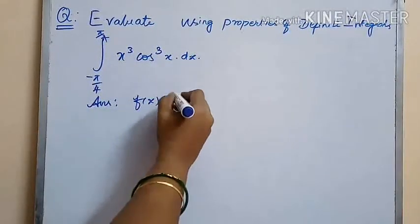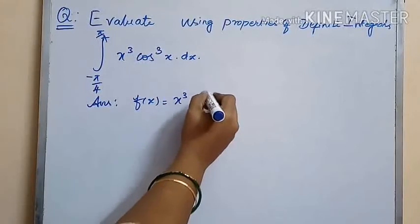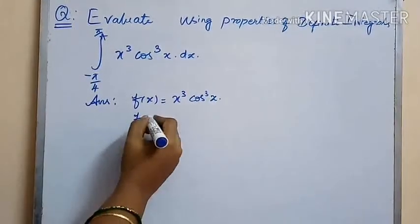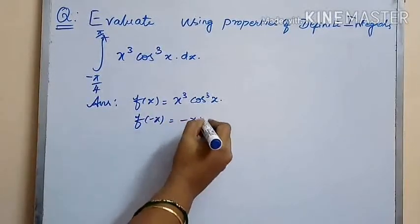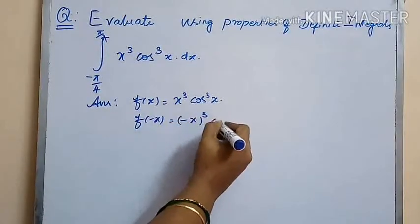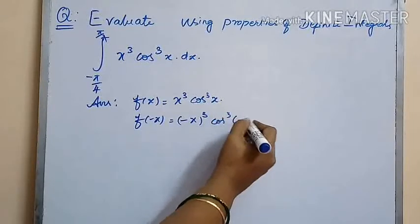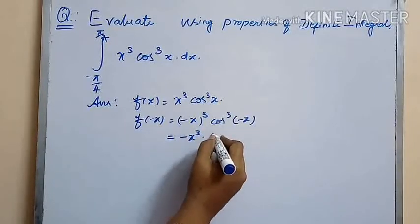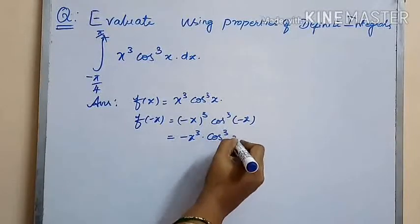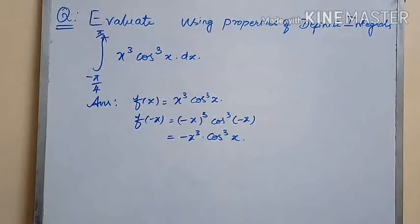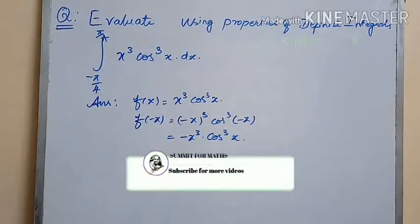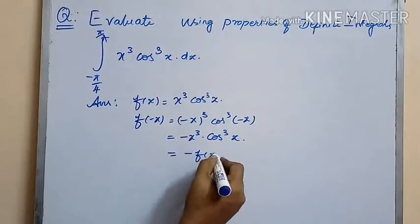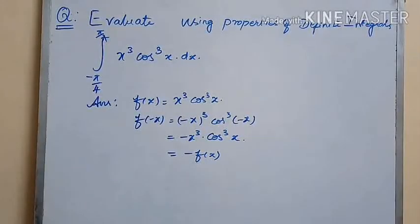Here we have f(x) as x³ cos³(x). So f(−x) is (−x)³ times cos³(−x), which gives minus x³ times cos³(x), because cos(x) is an even function. This implies f(−x) is equal to minus f(x).